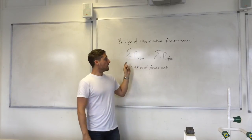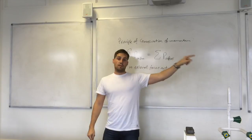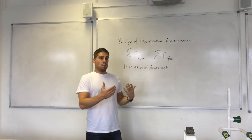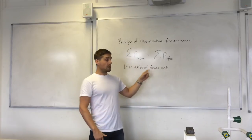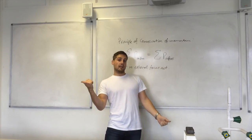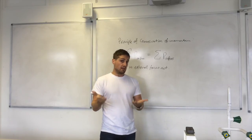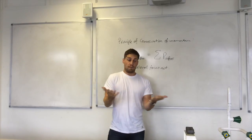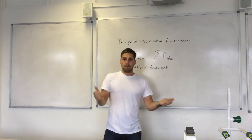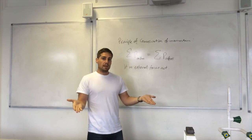And afterwards, the cannonball is moving off with a large amount of momentum in that direction. So for the total momentum after to be zero, something must have gained momentum in that direction. Momentum is a vector quantity, as you know, so therefore you need momentum in the other direction for the total to be zero.